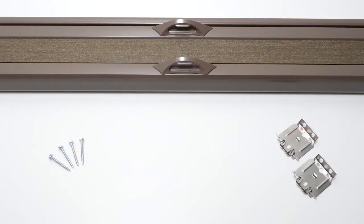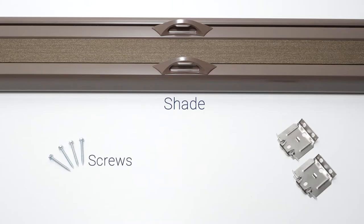All of our cellular shades have the same basic parts: the shade itself, a couple of screws, mounting brackets, and depending on the type of lift you ordered, a separate handle.